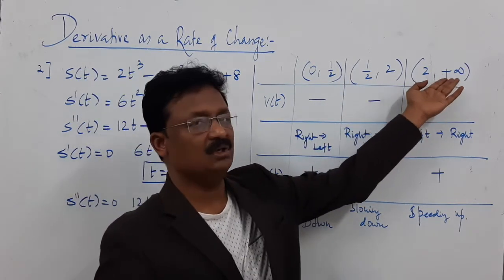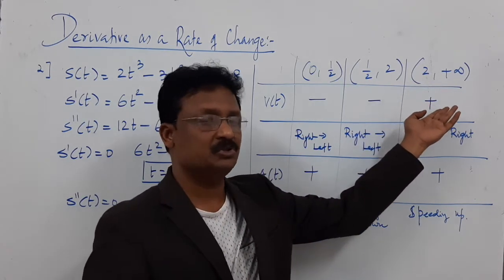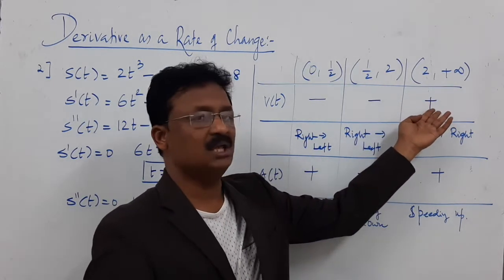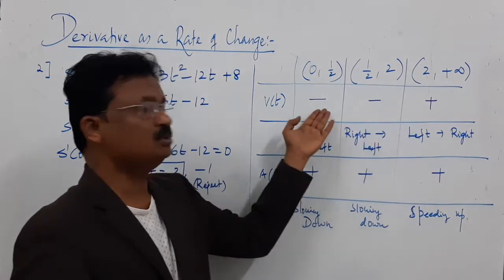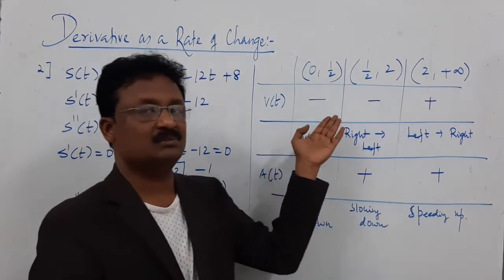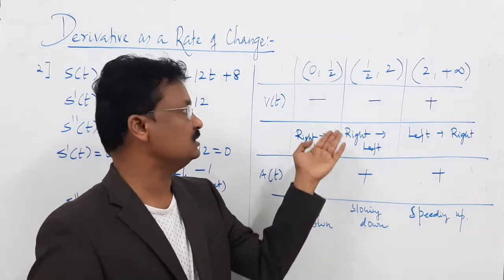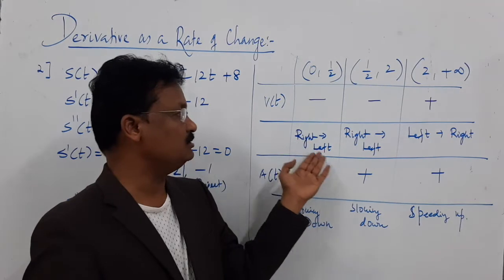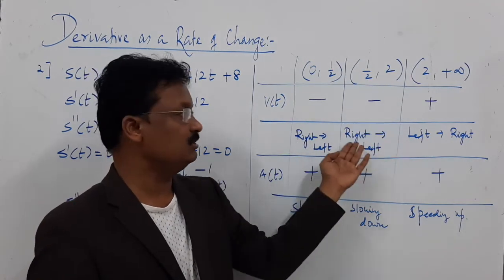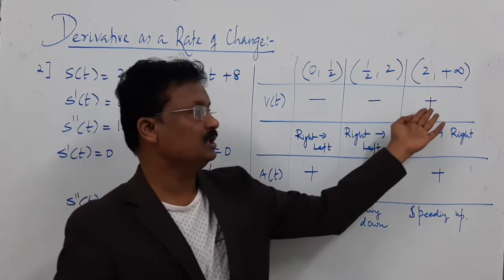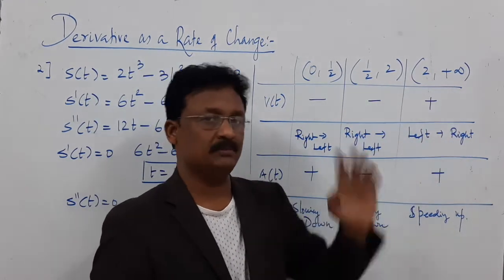For t values of 3, 5, 10, or 100 seconds (the interval 2 to infinity), the velocity is positive. So: negative velocity means right to left; positive velocity means left to right.